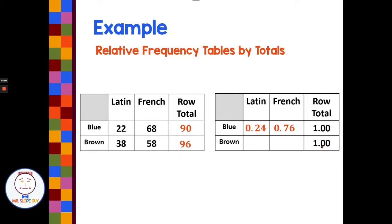How about this one? We're doing our overall total at 1.00 for this particular row. So 38 divided by 96, 0.4. 58 divided by 96, 0.6.